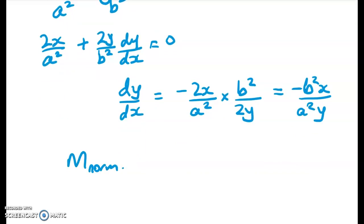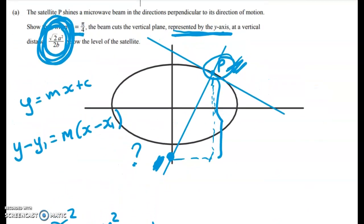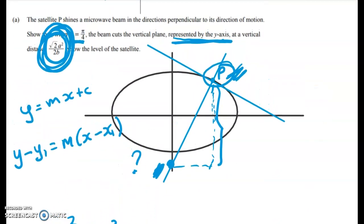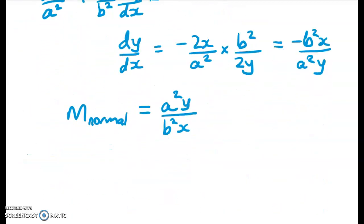So for the normal, my gradient is going to be this, a squared y over b squared x. Now, because we're working with a specific value of theta, which is pi on 4, I might as well start substituting in to clean things up.